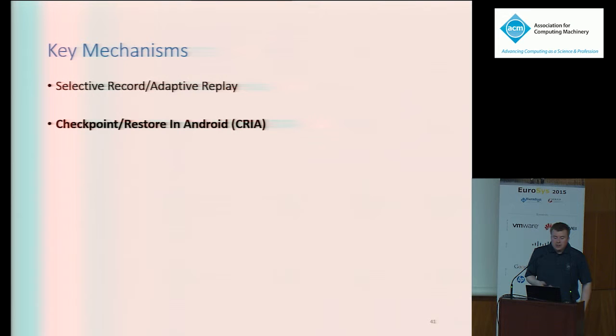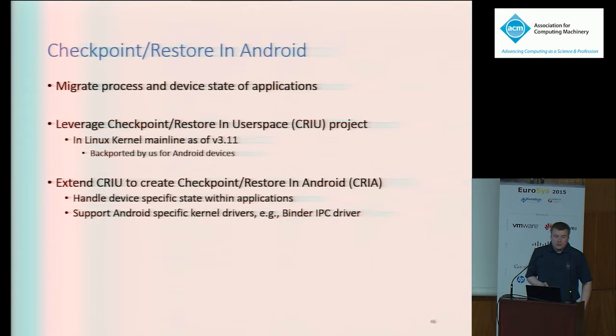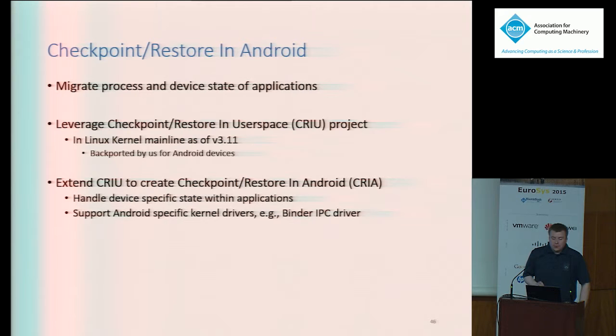Next I'll discuss the other key mechanism of Flux: Checkpoint Restore on Android. CREA is used to migrate the process and device state of an application — process state includes things like application memory, file descriptors, etc. To handle this, we leverage the Checkpoint Restore in User Space project, better known as CRIU, an OpenVZ-backed project that's been in the mainline Linux kernel since version 3.11. We extend CRIU to create CREA, which handles device-specific state residing within applications and supports Android-specific kernel drivers like the Binder IPC driver.